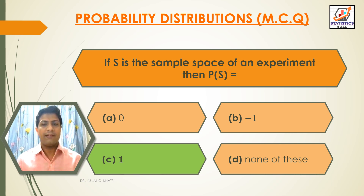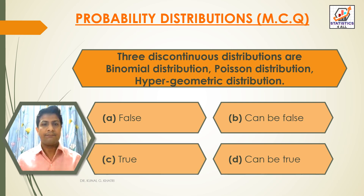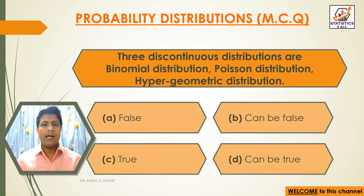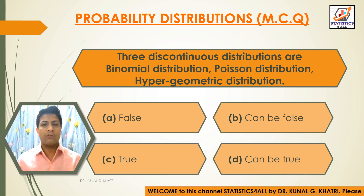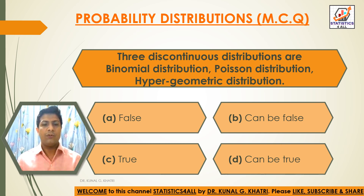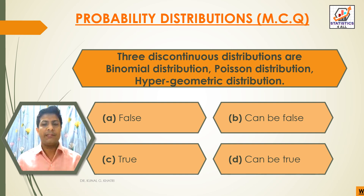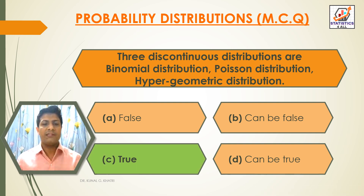Next question: three discontinued distributions are binomial distribution, Poisson distribution, hypergeometric distribution. Option A: false. Option B: can be false. Option C: true. Option D: can be true. The answer is option C, true.